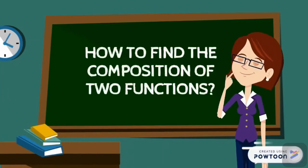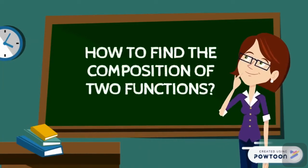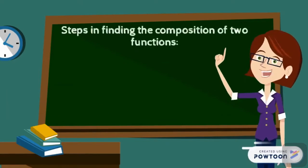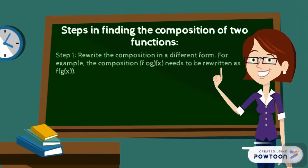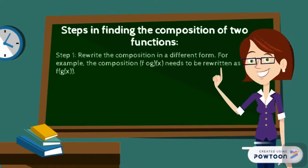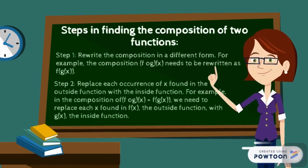Now, how do you find the composition of two functions? Let's move on to the steps on finding the composition of functions. Step number one, rewrite the composition in a different form. For example, the composition (f o g)(x) needs to be rewritten as f(g(x)).